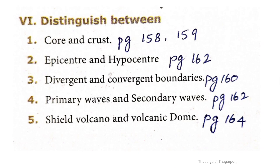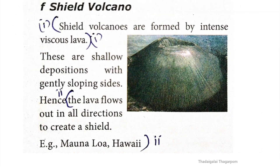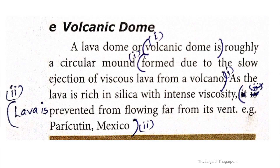Fifth question: shield volcano and volcanic dome. Answer given in page 164. Shield volcano is formed by less viscous lava; the lava flows out in all directions. Volcanic dome is formed due to the slow ejection of viscous lava from a volcano. The lava is prevented from flowing far, building a dome shape.